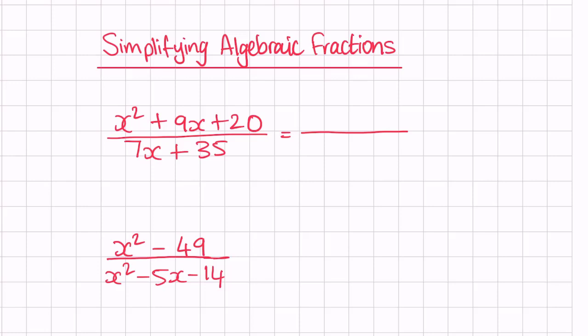The product is 20, so two numbers multiplied together give me 20, and when you add those two numbers together it gives me 9 — which are 4 and 5. So I can put these in brackets: x plus 4 and x plus 5. For 7x plus 35, the common factor is 7, so we put x plus 5 in brackets.